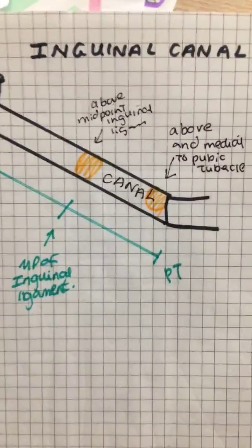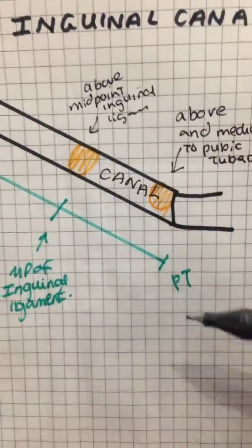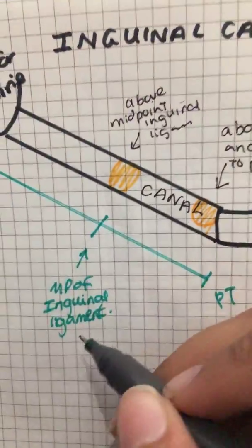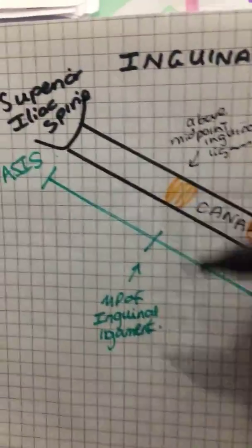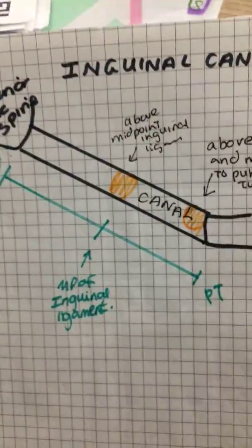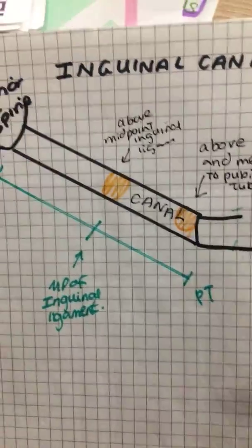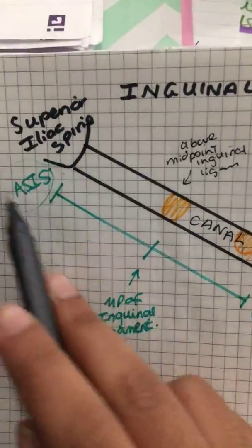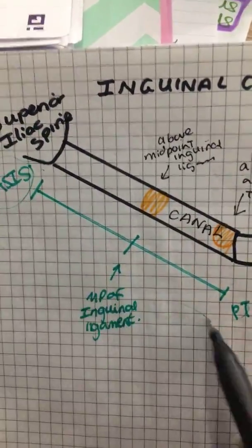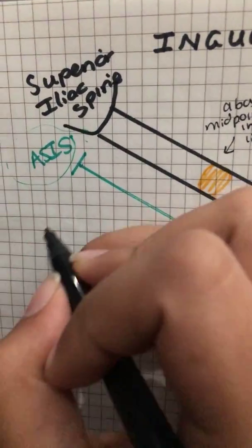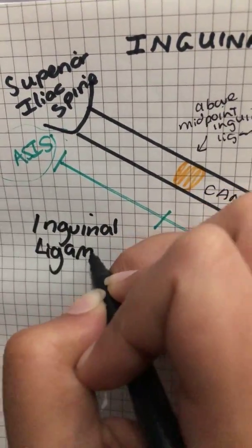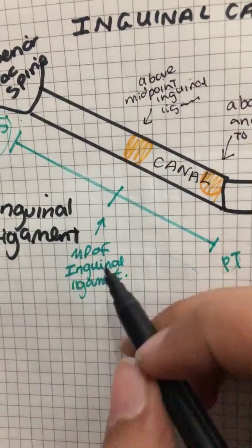Let's talk about the inguinal canal. First, let's talk about the inguinal ligament. The inguinal ligament runs from the anterior superior iliac spine all the way down to the pubic tubercle. Between these two points there are two rings. This is the anterior superior iliac spine, this is the pubic tubercle, and this would be called the inguinal ligament.